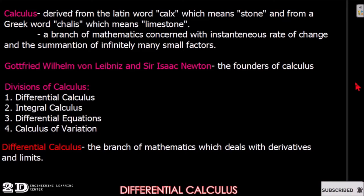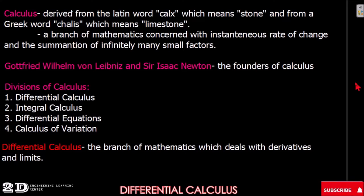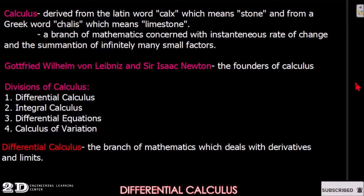The word 'calculus' is derived from the Latin word 'calcs,' which means stone, and from a Greek word 'chalice,' which means limestone. So basically, calculus comes from the word 'stone' itself — 'calcs' being the Latin word and 'chalice' being the Greek word.